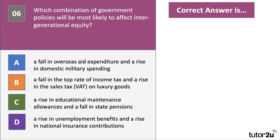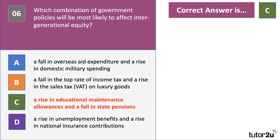The right answer to question six is C. Educational maintenance allowances — giving students financial support to go to school and college — would be a fiscal policy trying to increase the qualifications and human capital of younger people. A fall in state pensions would be the government cutting back on welfare for retired people. There is a clear intergenerational equity case there, whereas the other options don't deal with those differences in living standards across populations at different ages.